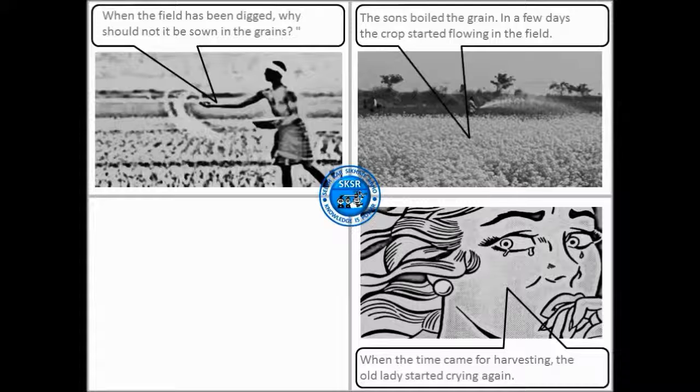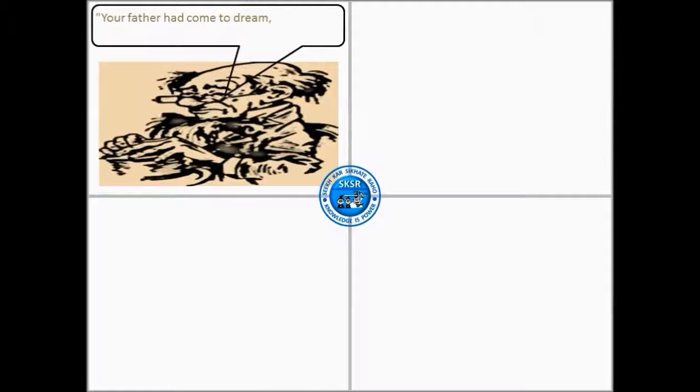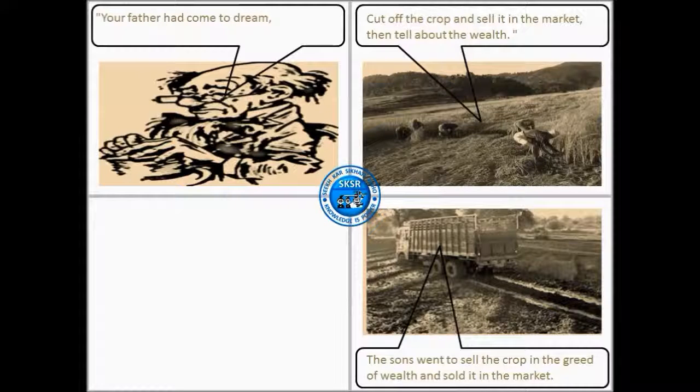When the time came for harvesting, the old lady started crying again. The sons asked what happened now. Your father had come in a dream. Cut off the crop and sell it in the market, then tell about the wealth. The sons went to sell the crop in the greed for wealth and sold it in the market.